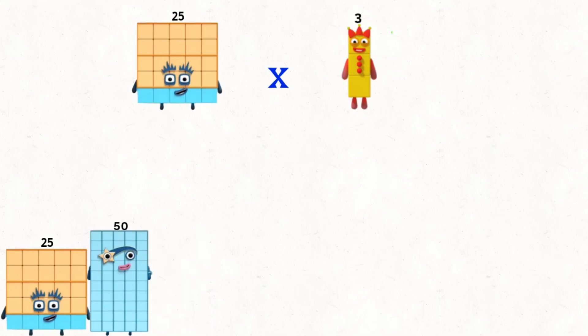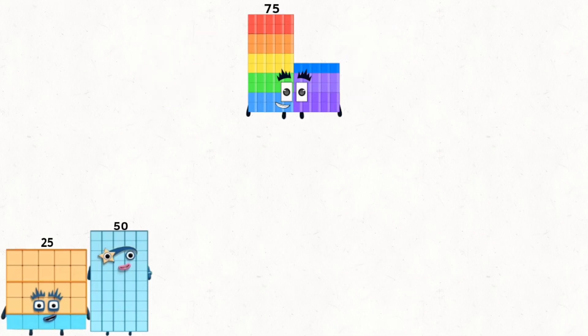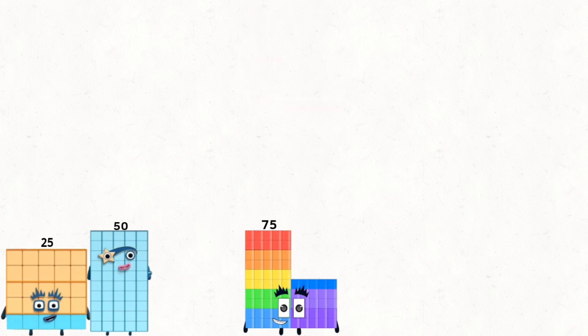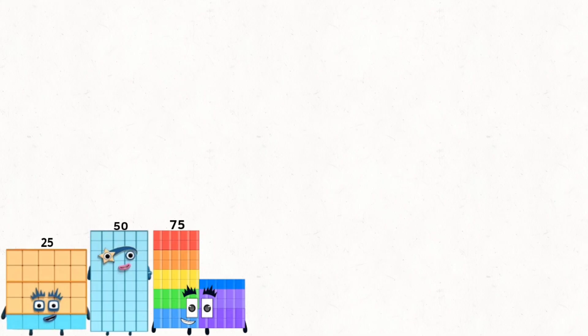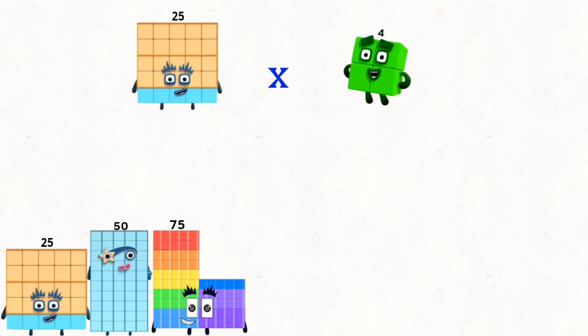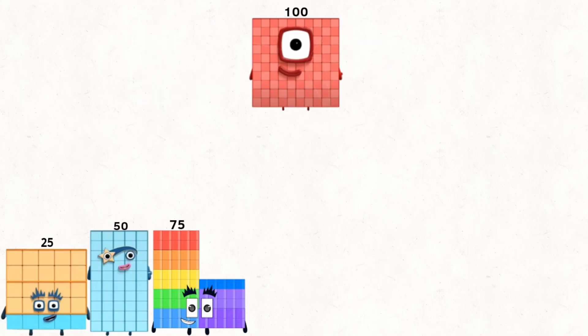25 times 3 equals 75. 25 times 4 equals 100.